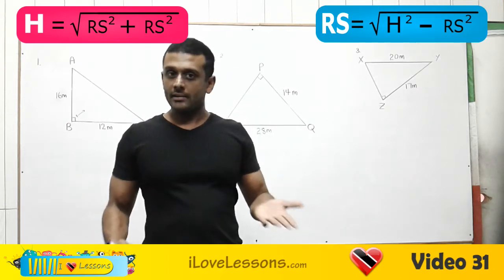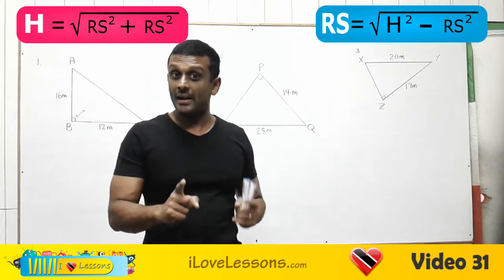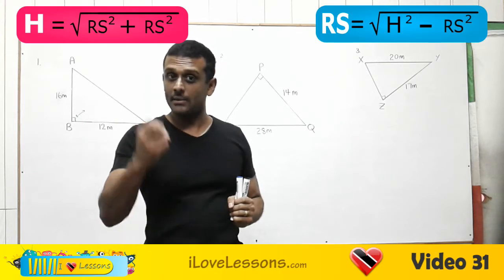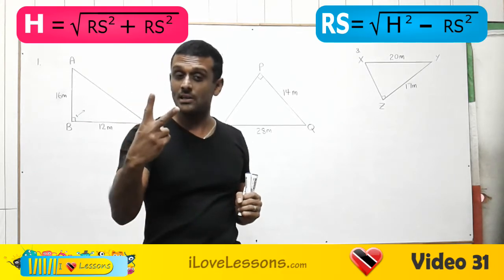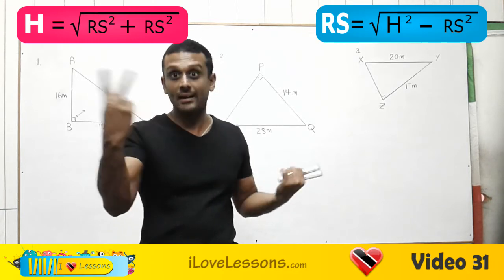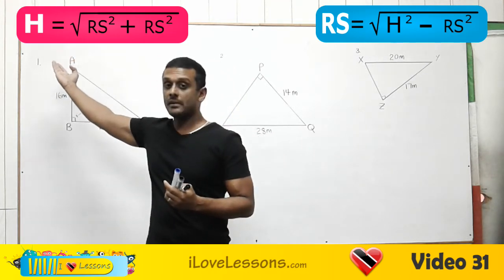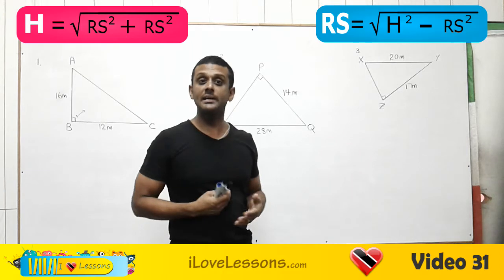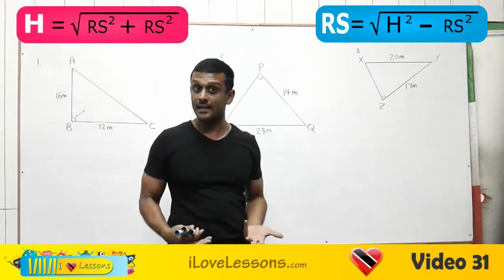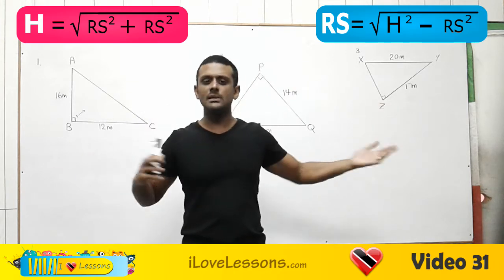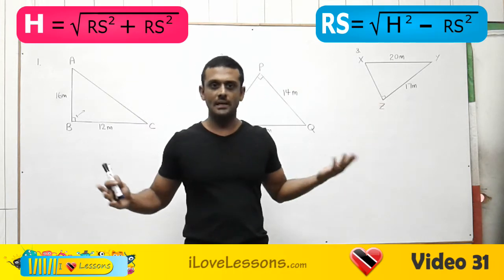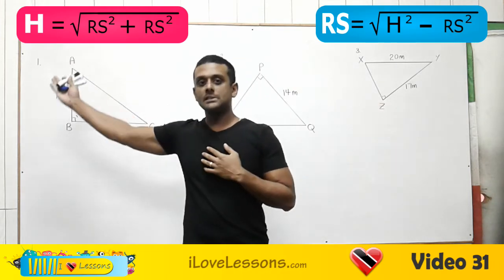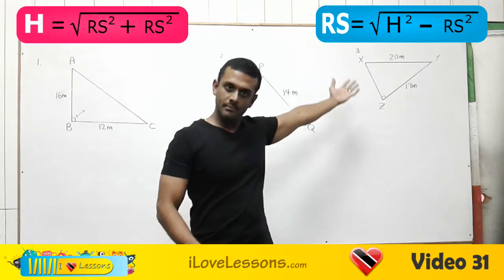When you're using Pythagoras theorem, remember you're trying to find a missing side, and the examiner has to give the length of exactly two sides. If you are trying to find the length of the hypotenuse, you use the pink formula. If you are trying to find the length of a regular side, you use the blue formula. I'm going to show you when to use the pink one and when to use the blue one.